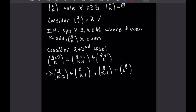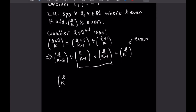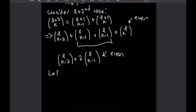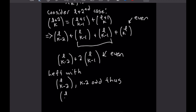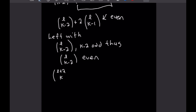By our induction hypothesis, l choose k is even. Combining the two middle terms gives l choose k minus 2 plus 2 times l choose k minus 1. Since there is a factor of 2 out front, that middle piece is also even. Finally, because k is odd we know k minus 2 is also odd, which means l choose k minus 2 is even by our induction hypothesis. Since we have the sum of even numbers, the result is even, and we have proved that l plus 2 choose k is even.